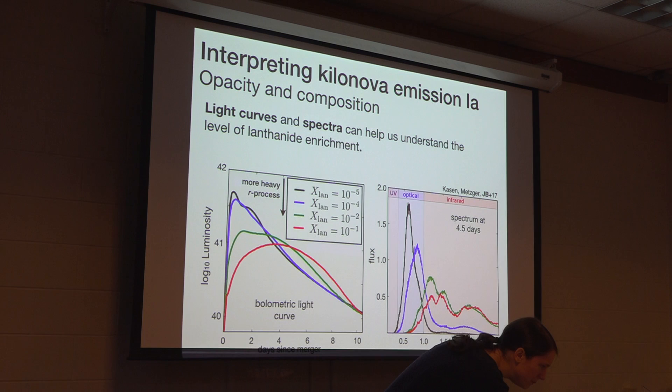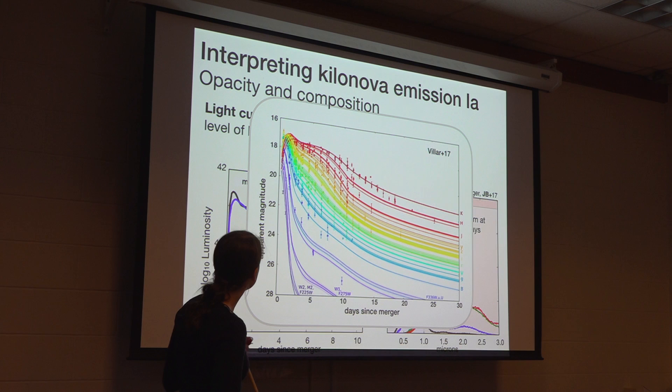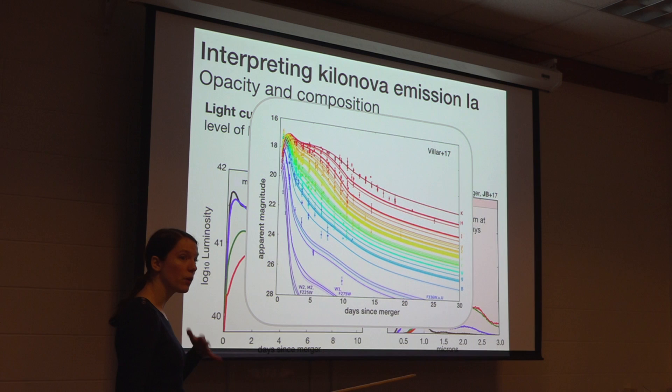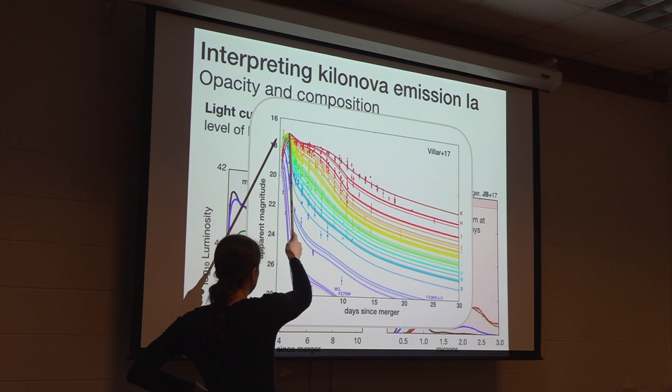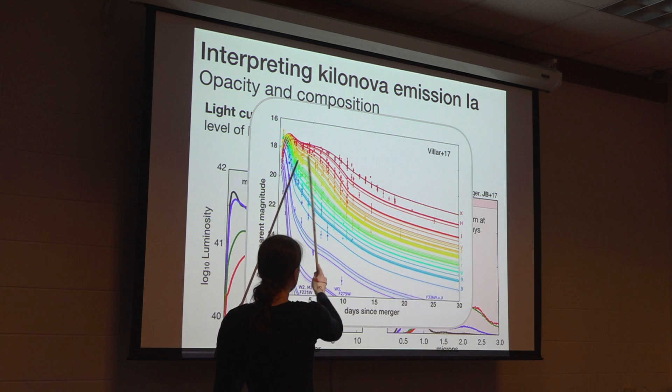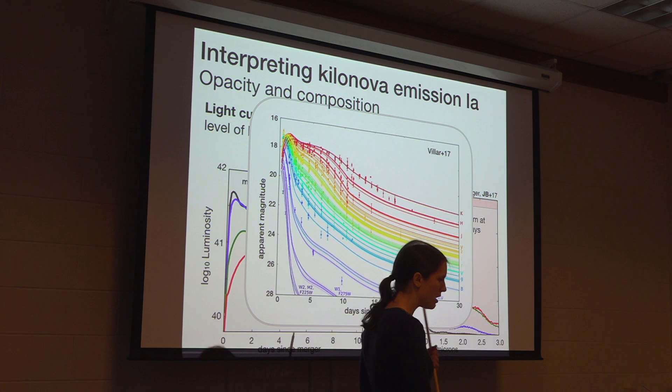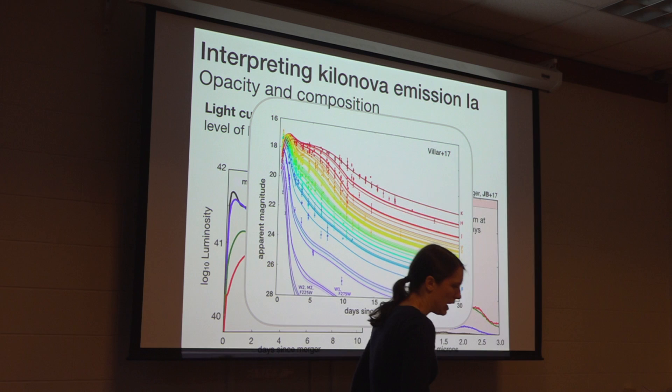Going back to Ashley's figure, we tried to think about whether we see something that's kind of long, dim, and red, or bright, short-lived, and blue. We don't really see clear evidence for one or the other. Instead, we kind of see evidence for both: some bright blue early-peaking emission in the bluer bands that fades away rapidly, and then longer-lived emission in the redder bands that becomes prominent later on. This suggests that there might actually be two different components present in the kilonova, corresponding to two different levels of lanthanide enrichment.